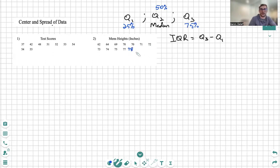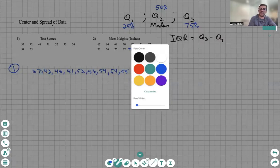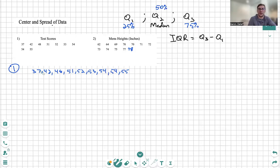To find Q1 for number one, the first thing we have to do is rewrite everything from least to greatest. That is probably the hardest thing we're going to have to do. Next thing we need to find the median. Once we find the median we're able to move forward.